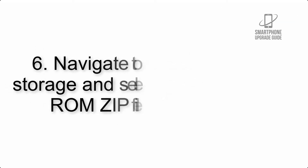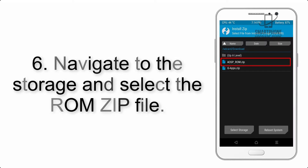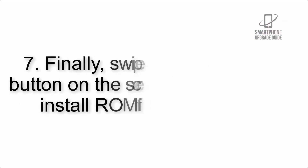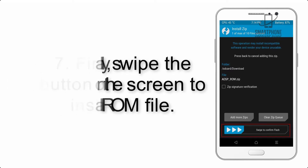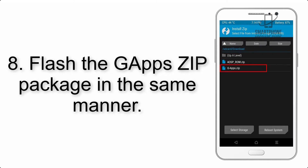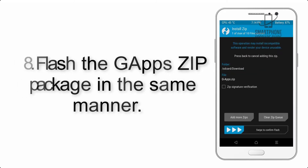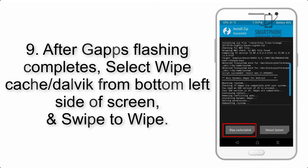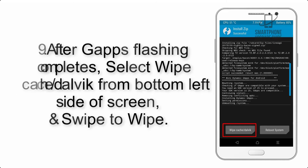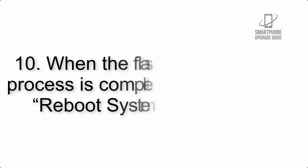Step 6: Navigate to the storage and select the ROM zip file. Step 7: Swipe the button on the screen to install the ROM file. Step 8: Flash the GApps zip package in the same manner. Step 9: After GApps flashing completes, select Wipe Cache and Dalvik from the bottom left side of the screen and swipe to wipe.